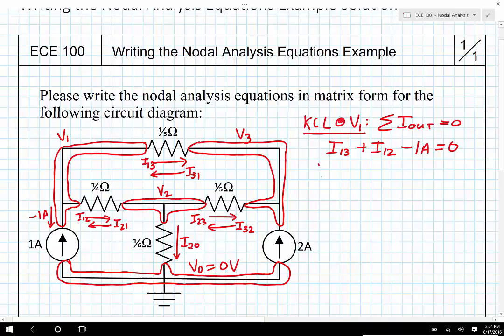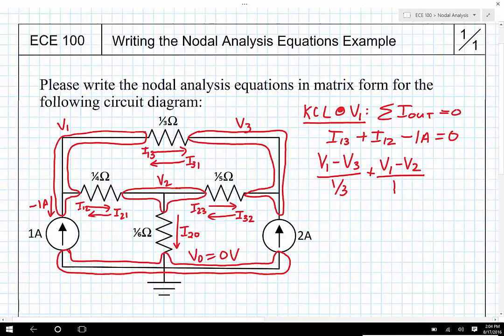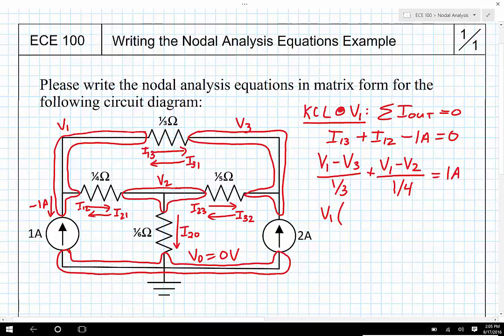i1,3 can be written as V sub 1 minus V sub 3 divided by the resistance between them, which is going to be one third of an ohm, plus V1 minus V2 divided by the resistance between node 1 and node 2, and that is one quarter of an ohm. And then I'm going to move the one amp over to the other side. And then I'm going to separate V1, V2, and V3, and I'm going to put them in ascending order. So this will be V1 times one third plus one, oh, not one third, it's one over one third. By the way, you're never going to have a one third ohm resistor. I did this just to make the math really nice for you. So one over one third is three, one over one fourth is four.